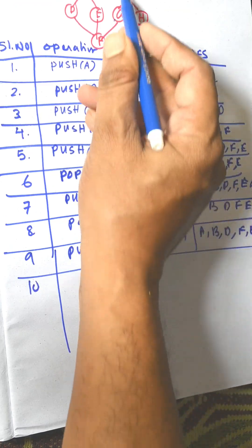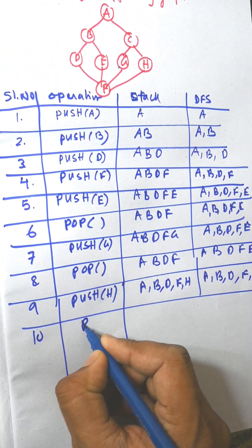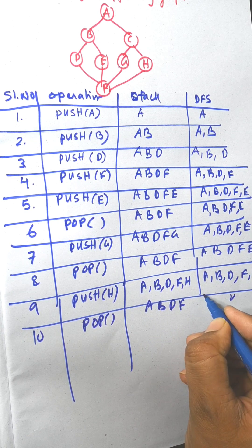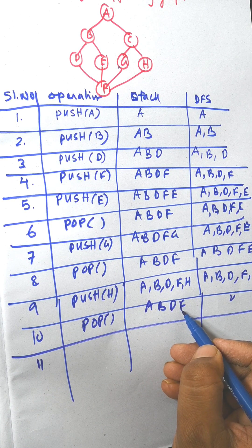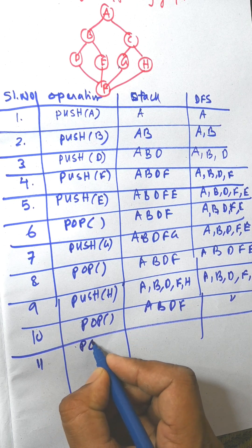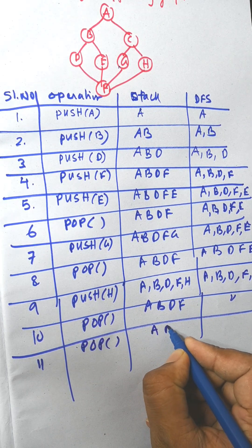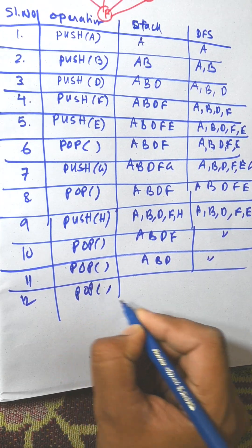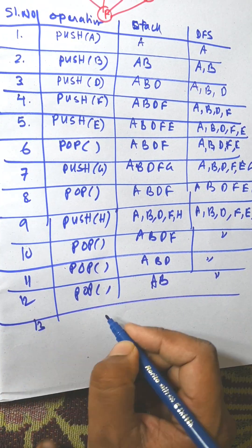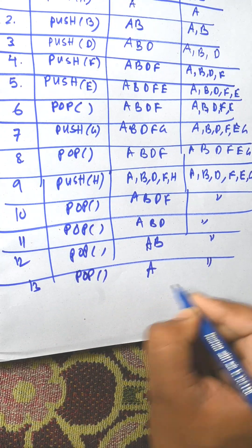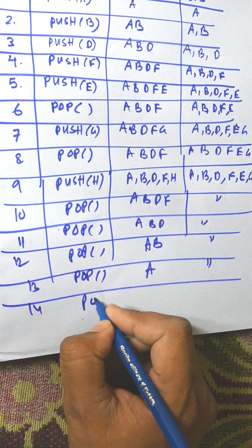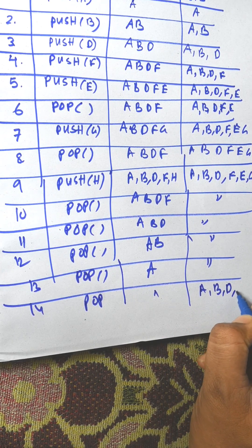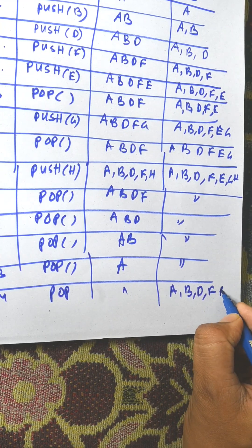H is already visited, so we perform a pop operation. Stack becomes A, B, D, F. Next, from F all neighbors are visited, so pop again — stack A, B, D. Pop again — stack A, B. Pop again — stack A. Finally, the last pop makes the stack empty. The final DFS traversal answer is A, B, D, F, E, G, H.